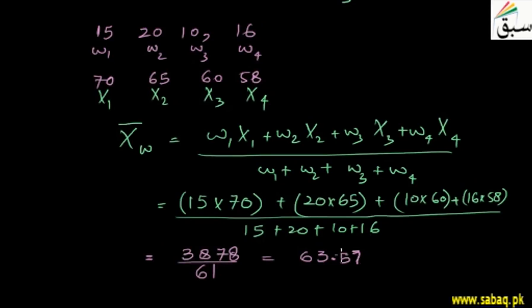What is weighted average? If you take simple average, then you add all the scores and divide it by 4, then the average will be simple average. But the average of 70 for 15, 65 for 20, 60 for 10 and 58 for 16 is weighted average score 63.57.